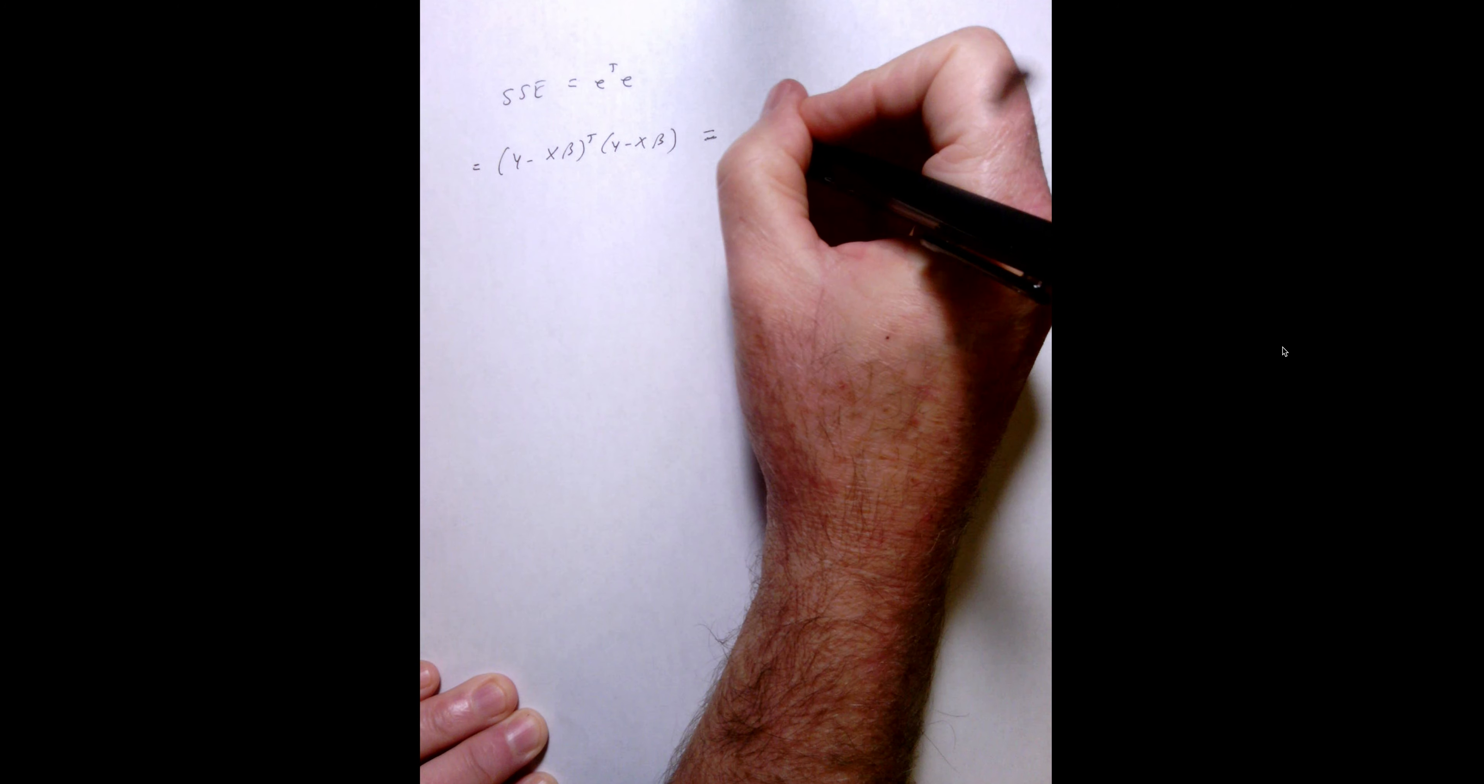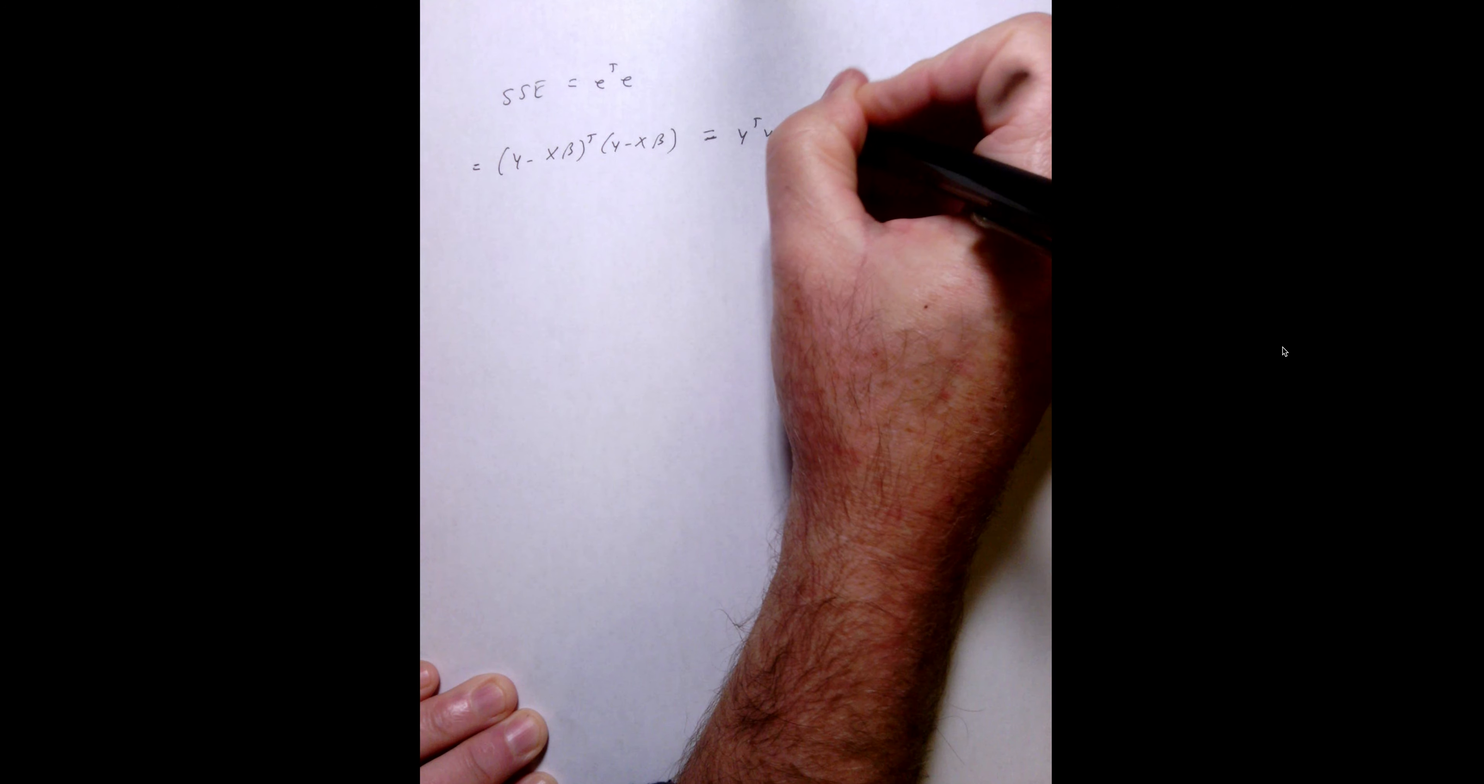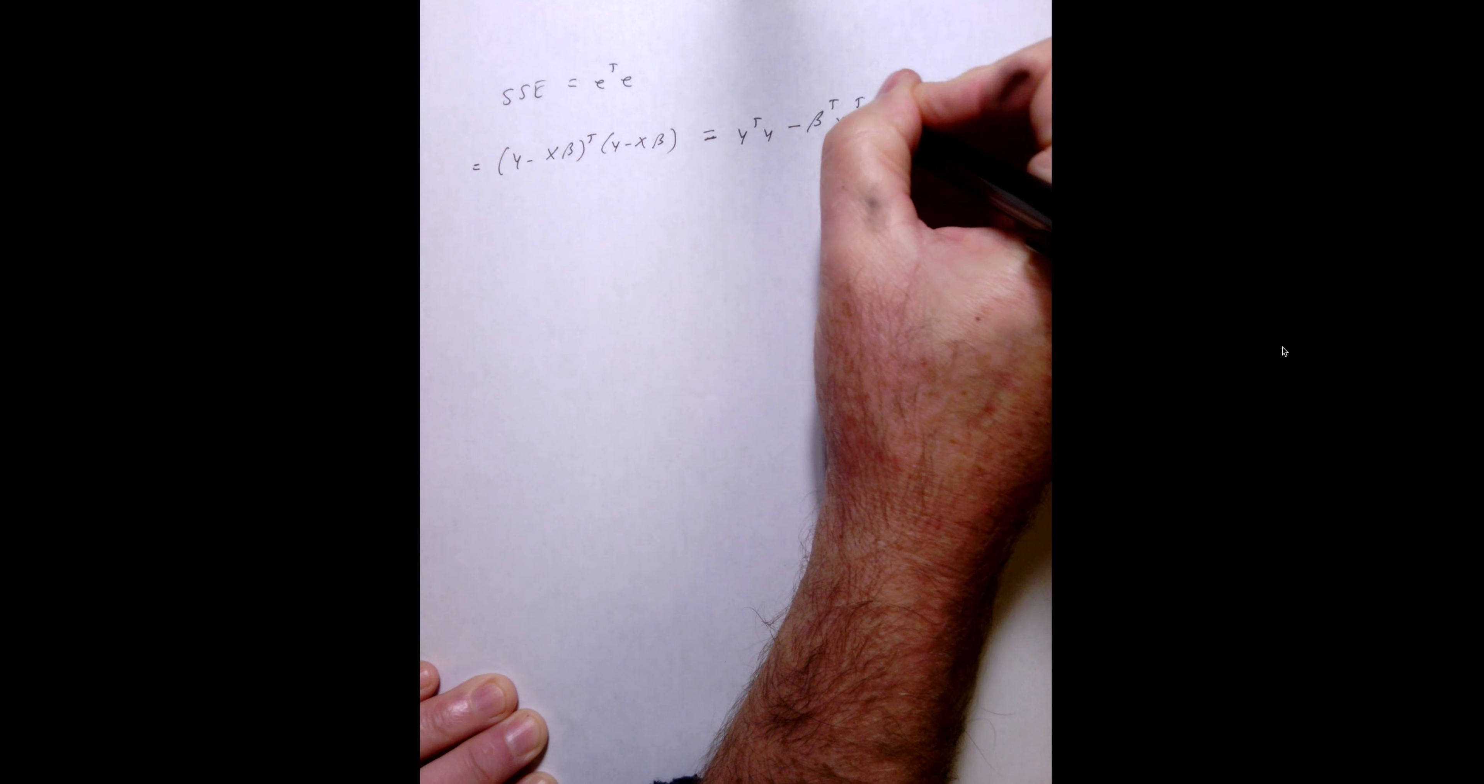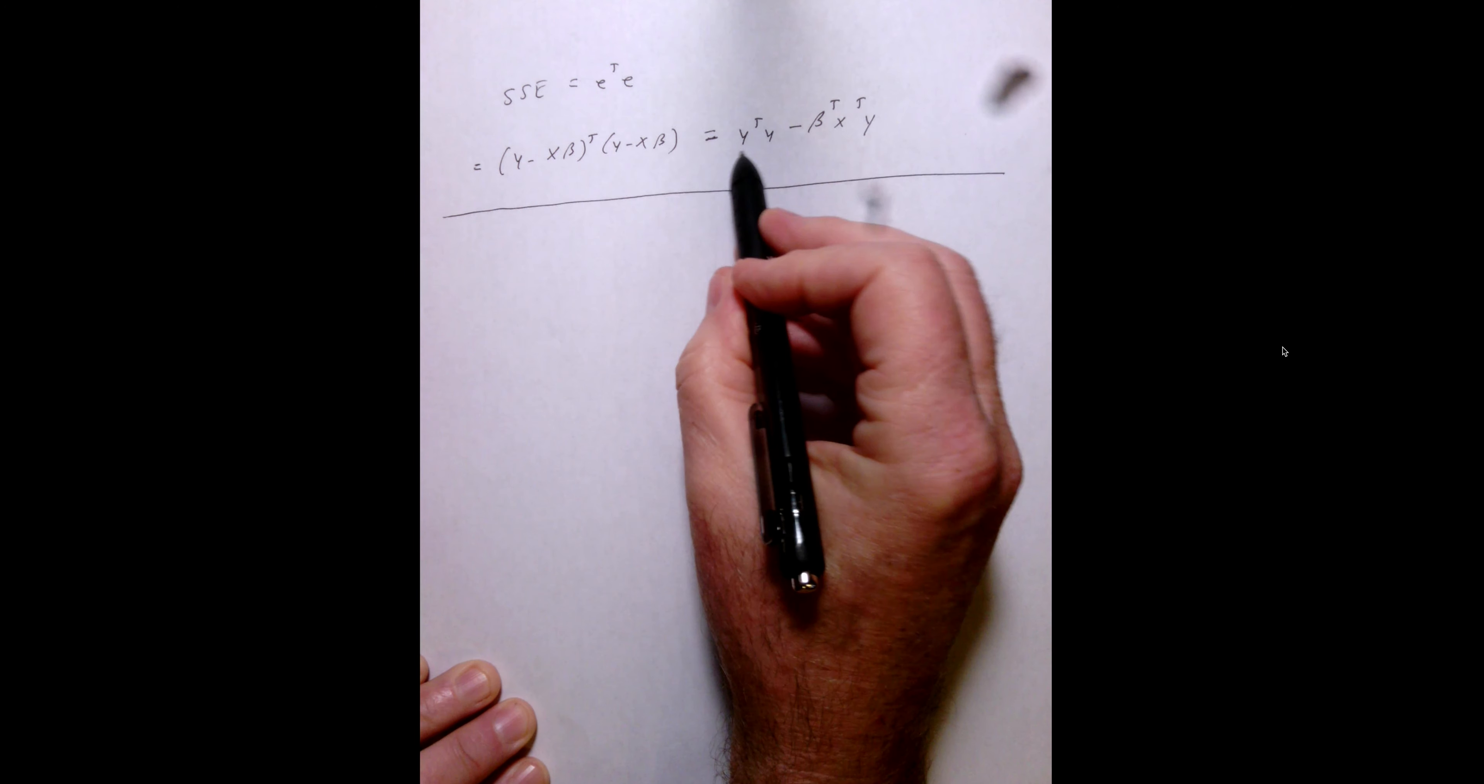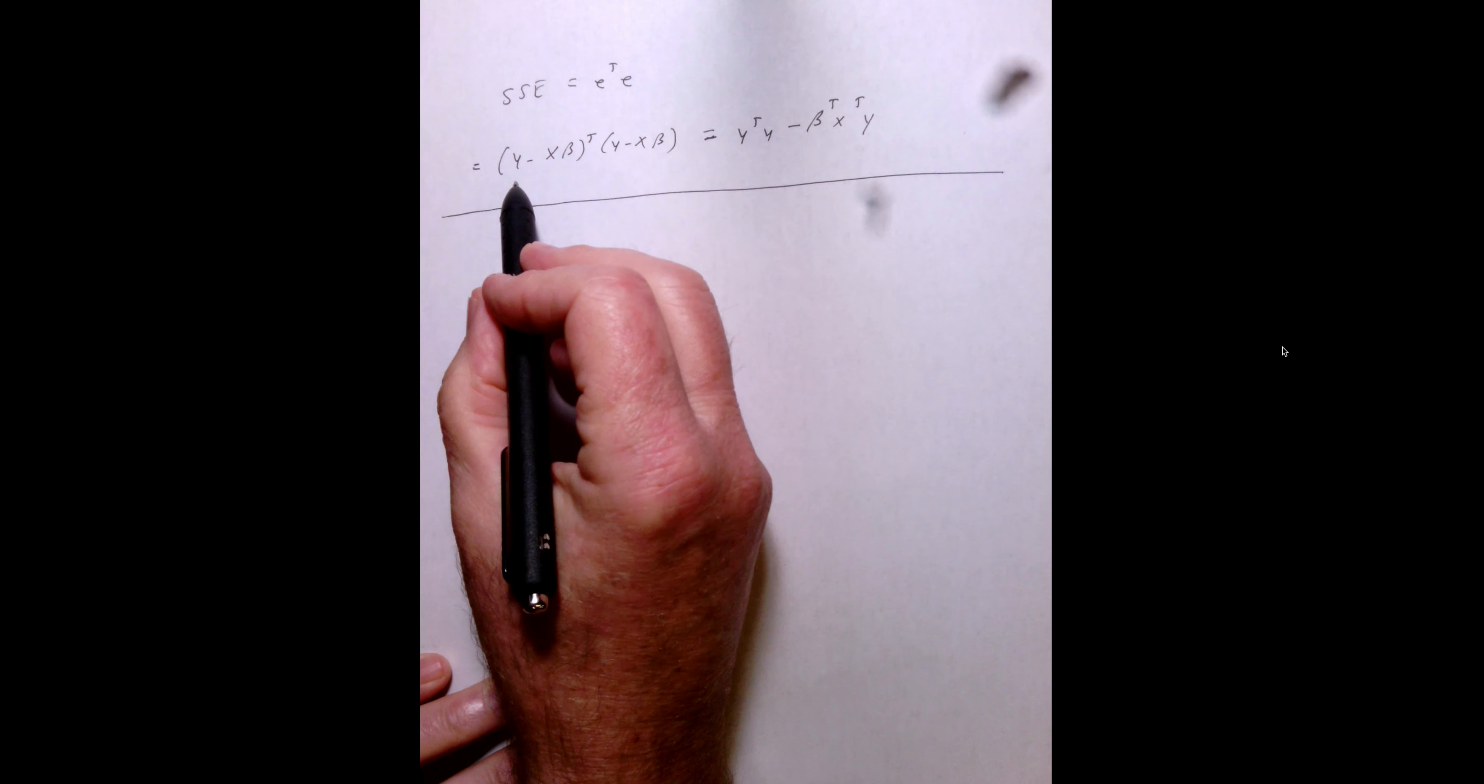And this actually just turns out to be y transpose y minus beta transpose x transpose y. Is that right? Yeah, yeah, that's right. Okay, now let's get in and prove this.